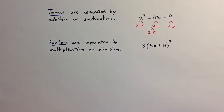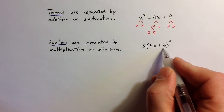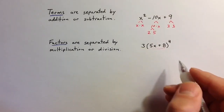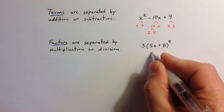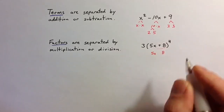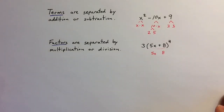So within a term, you can have factors. And within a factor, you can have terms. In this factor here, 5x plus 8, we can think of 5x as a term and 8 as a term. So terms and factors are really relative to the expression overall.